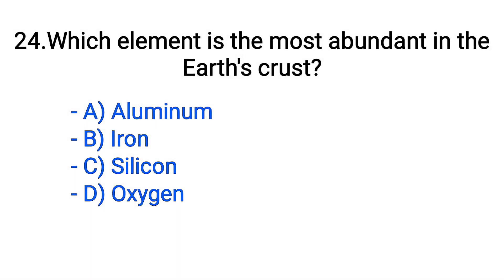Question number 24. Which element is the most abundant in the earth's crust? Option A: Aluminium. B: Iron. C: Silicon. D: Oxygen. The correct answer is option D, Oxygen.